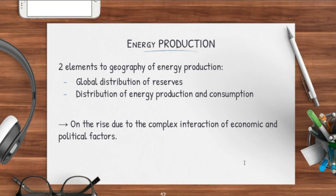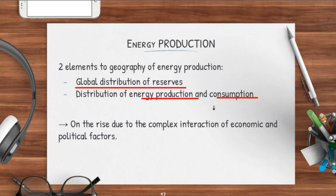Next, you have got energy production. Energy production basically has got two elements to it. One is the global distribution of reserves. The other is the distribution of energy production and consumption. The geography of energy production stems from how much of your reserves are being globally distributed — for example, how much fossil fuels does China get as compared to Singapore? As well as your distribution of energy production and consumption: by producing tidal energy from hydropower, are you actually distributing it out? Is there a lot of production or is there higher consumption? Don't get the geography of energy production confused with energy production itself.